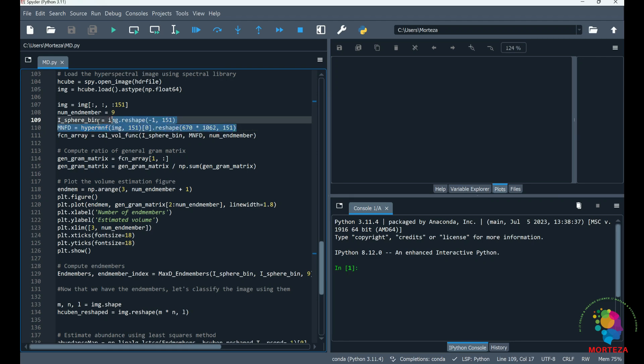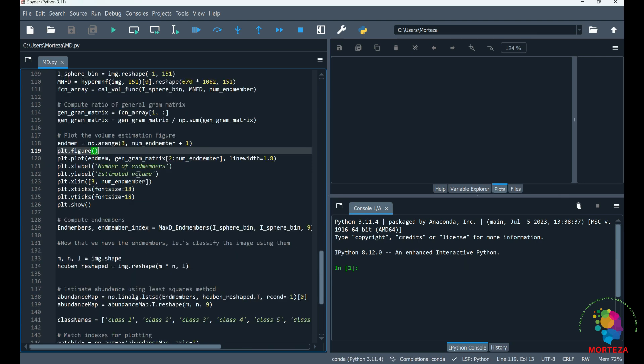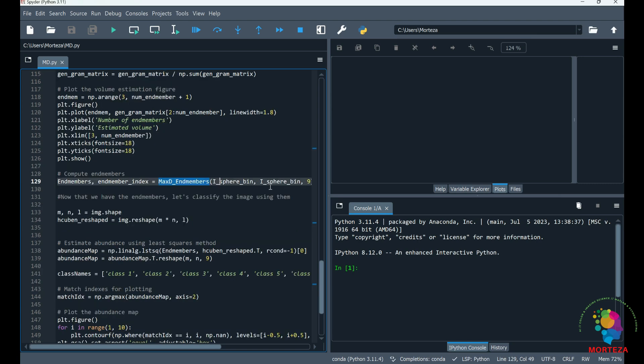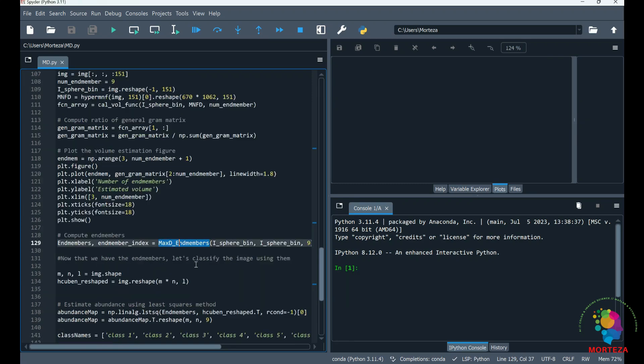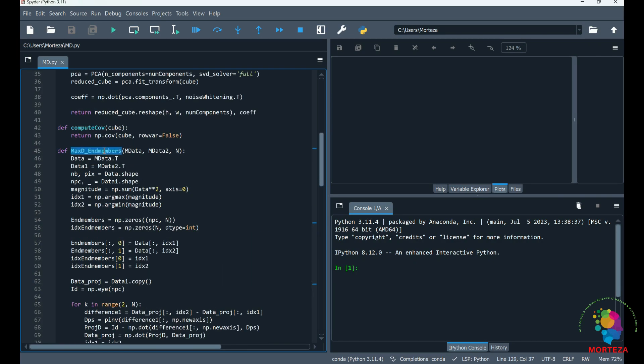This is where we reshape our hyperspectral data, and then we compute the principal components using maximum noise fraction. Then we compute the volume of the linearly independent end members, and we also compute the gram matrices. This is where we show the volume of the linearly independent end members, and using this you could tell how many linearly independent end members you have. Then this is where you compute the end members using maximum distance, which is located here.